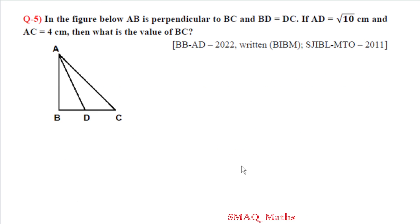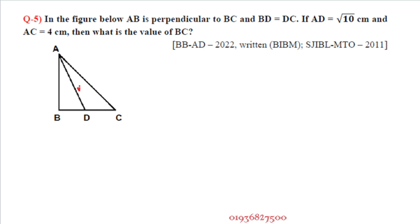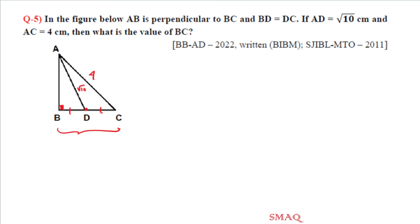Question 5: In the figure below, AB is perpendicular to BC and BD equals DC. If AD equals root 10 centimeters and AB equals 4, what is the value of BC? Since BD equals DC, D is the midpoint of BC, so BD equals BC divided by 2.